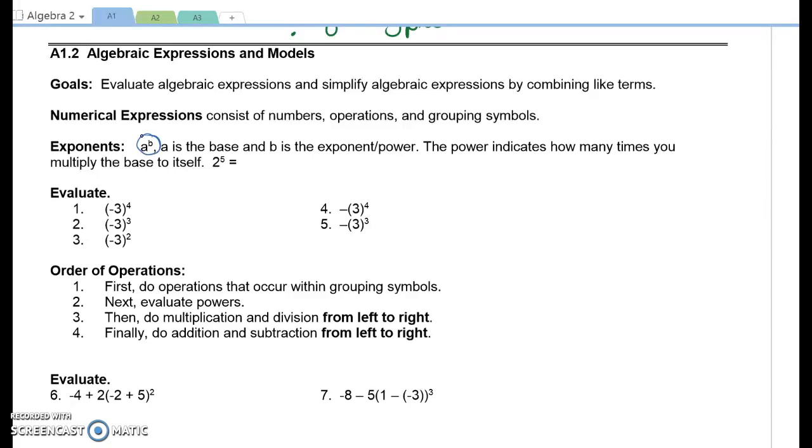The exponent indicates how many times you multiply the base to itself. For example, 2 to the 5th means 1, 2, 3, 4, 5. 2 to the 5th means that you're multiplying 2 five times.